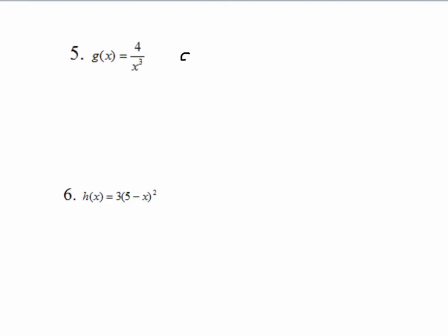In number 5, we are going to do a rewrite, and the rewrite for g of x is 4x to the negative third power. It's important to do that because now we can use our power rule, and very simply,